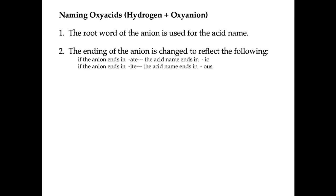Then you're going to change the ending of the ion, depending on what ending it already has. So if the anion ends in A-T-E, its acid name ends in I-C. If the anion ends in I-T-E, the acid name ends in O-U-S. A-T to I-C, I-T to O-U-S. And then lastly, you just tack on the word acid at the end.